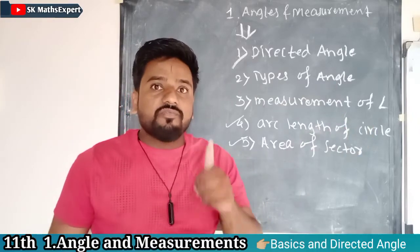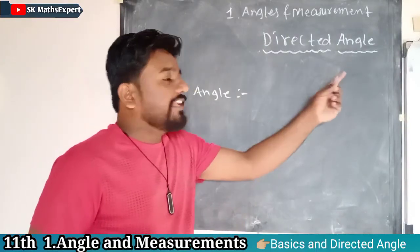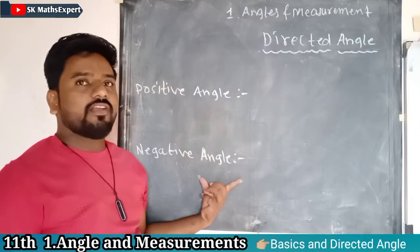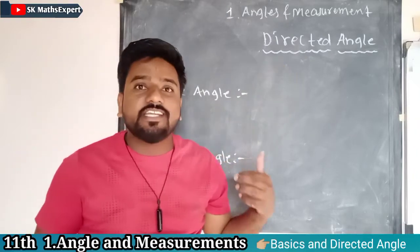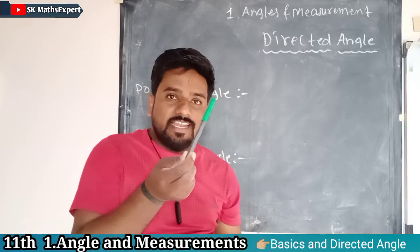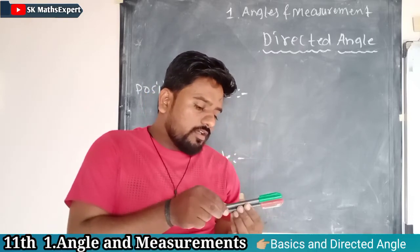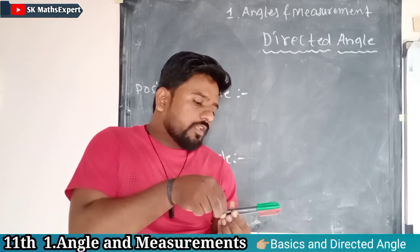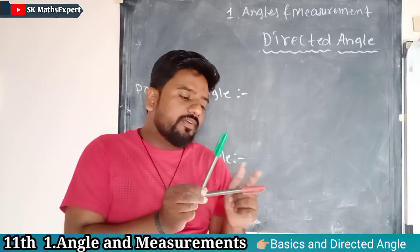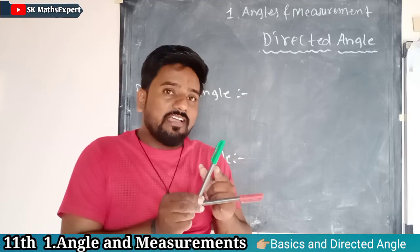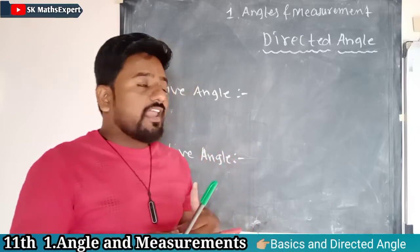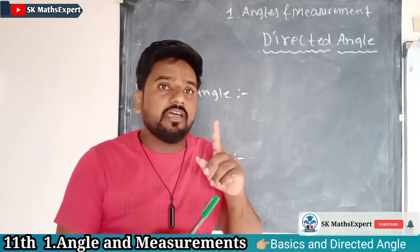Let's start with the first topic — directed angle. Dear students, a directed angle may be a positive angle or a negative angle. Suppose there are two rays overlapping each other — this is the green ray and this is the red ray. Suppose the green ray rotates in an upward direction; you will get some angle between the red ray and the green ray. This angle is called a directed angle.